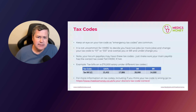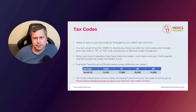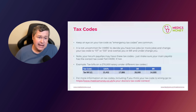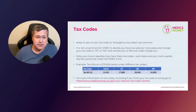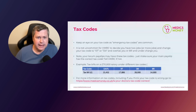In Scotland, these D codes are slightly different. If you see SD0, you are being taxed entirely at the intermediate rate of 21%. SD1 applies the higher tax rate of 42%, and SD2 applies the top rate of 47%. This is simply because Scotland has more tax rates, so they need different codes to accommodate that.